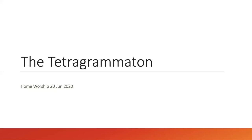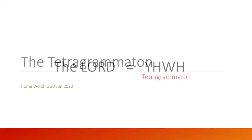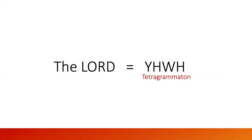The Tetragrammaton is effectively the four-lettered name of the Father. When you see 'the Lord' in the Bible, it's covering over these four letters: Y, H, W, H. That is a transliteration. If you've been with us in previous studies, we looked at the difference between transliteration and translation.